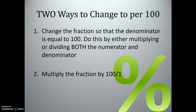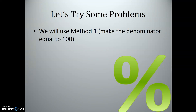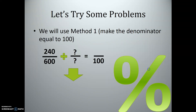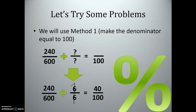We have two methods. Method one is to change the fraction so the denominator equals 100 by multiplying or dividing both the numerator and denominator. Method two is to multiply the fraction by 100 over 1. Using method one: we divide the numerator and denominator of 240 over 600 by 6, and we get 40 out of 100. We're really multiplying by 6 over 6, which equals 1. So the answer is 40%.